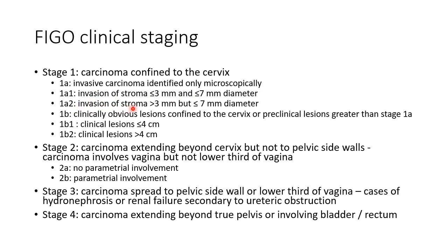In stage 1a2, there is invasion of stroma greater than 3 mm but less than or equal to 7 mm diameter. In stage 1b, there are clinically obvious lesions confined to the cervix, or preclinical lesions greater than stage 1a, i.e., greater than 7 mm diameter. Stage 1b is further subdivided into 1b1 and 1b2. In 1b1, the clinical lesions are less than or equal to 4 cm, whereas in 1b2 the clinical lesions are greater than 4 cm.